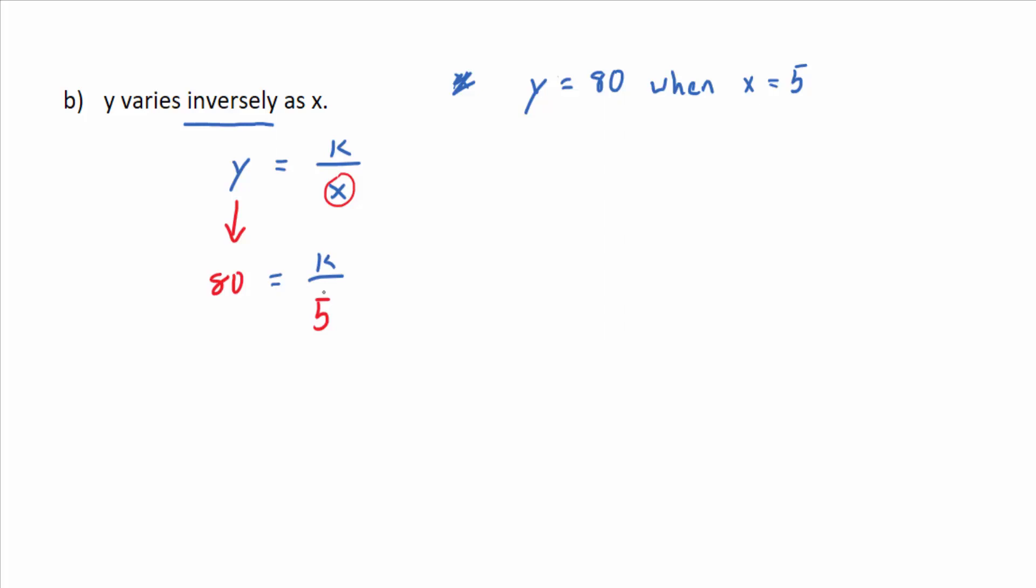What do you get for k? What's 5 times 80? You'd have to multiply both sides by 5, wouldn't you? So 400.